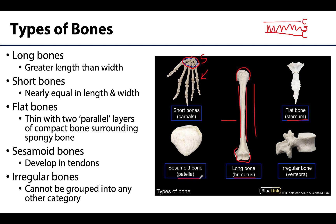The fifth category of bone is for all the other bones that just don't fit into one of the other four categories, and these are the irregular bones. These have very complex shapes, as you can see here in the vertebrae, which are an excellent example. Many of the facial bones of the skull and the calcaneus, or heel bone, are also examples of irregular bones.